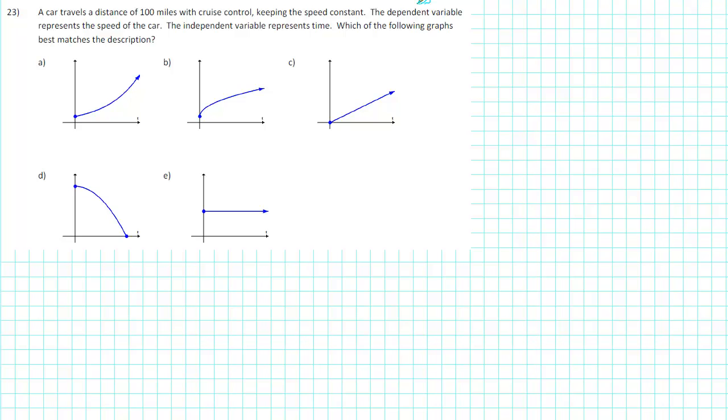First of all, notice that the dependent variable represents the speed of the car. That means that the speed of the car goes along the vertical axis. Next, we're given that the independent variable represents time. So time will go along the horizontal axis.